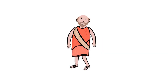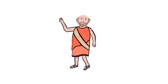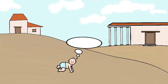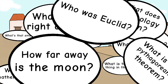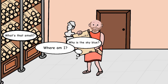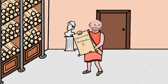This is Eratosthenes. He was born in 276 BC in Cyrene, Greece. As a young child he would ask hundreds of questions. He later became head librarian at the Library of Alexandria, where he came up with his plan to measure the earth.